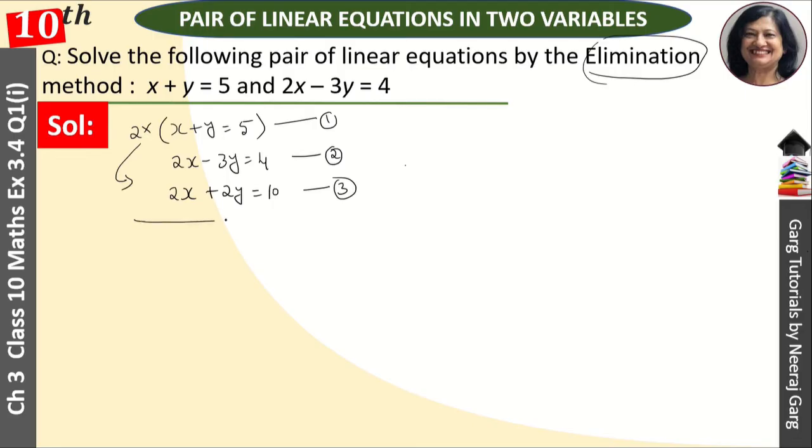After this, what do we need to do? Now we have these two equations where the coefficient with x in both is 2. We have 2x and 2x. Now if the signs of both these are same, what will we do? We'll subtract. And in subtraction, what do we do? We change the signs. Here it becomes minus, here also minus, and here also minus.